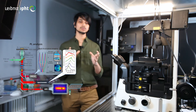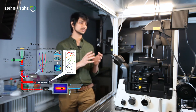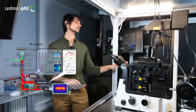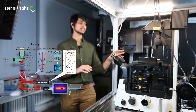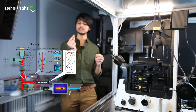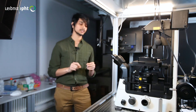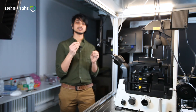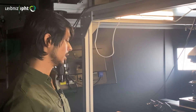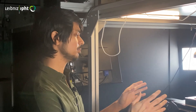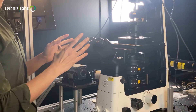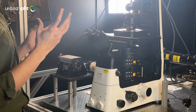Once we do this photoluminescence mapping, we record the back focal plane image in the same configuration, but using this camera. It tells you the momentum distribution of the light which is emitted from the single fluorophore that we have placed in the nano antenna. The back focal plane tells us about the directionality of the photons emitted from the fluorophore. In summary, this multifunctional microscope helps us to study the nano antenna by recording its directionality.